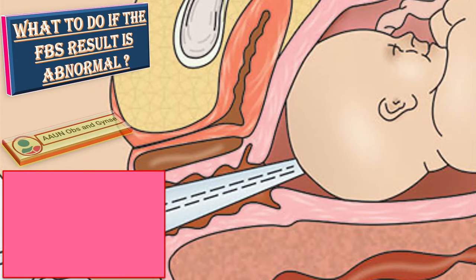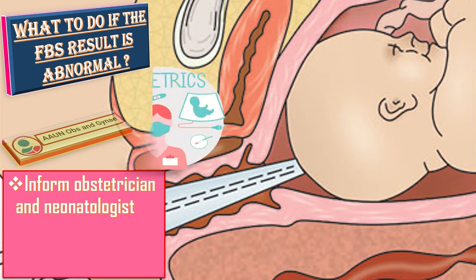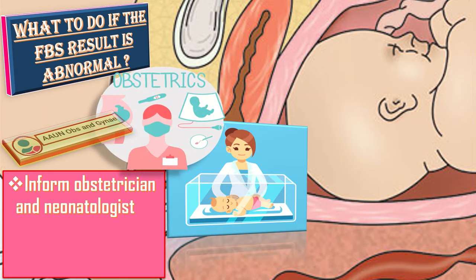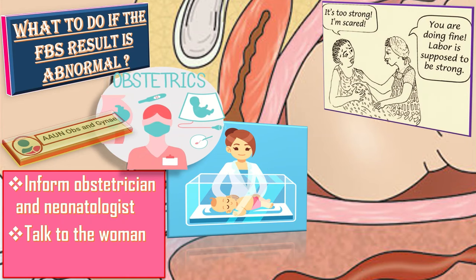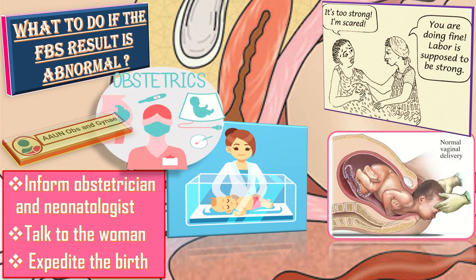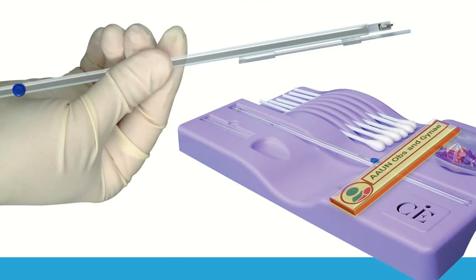What to do if the fetal blood sample result is abnormal? In that case, inform the senior obstetrician and the neonatal team, as it is best to follow a multidisciplinary team approach. Talk to the woman and her birth companion about what is happening and take her preferences into account. The third step is expediting the birth, as it is now an emergency situation.